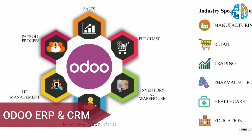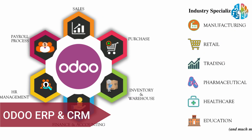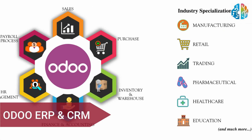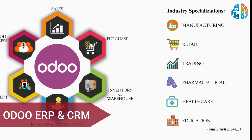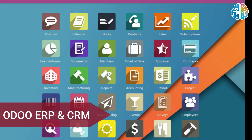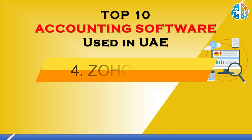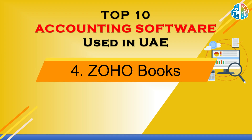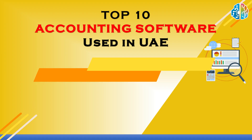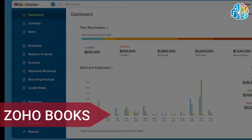The third popular accounting software is Auto ERP and CRM. It is an integrated enterprise resource planning and customer relationship management software. You should make yourself familiar with this software to get a good accountant job.